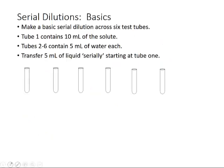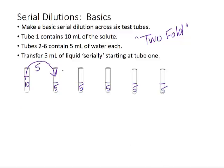What about serial dilutions? Let's start with the most common and basic serial dilution, which is called a twofold. Basically what twofold means is we're cutting the concentration in half with each step. I'm going to make a basic serial dilution across six test tubes. Tube one has 10 milliliters. Tubes two through six have five milliliters of water each. I know it seems silly to some of you to draw this out, but if you're a beginner, drawing it out really helps. I'm going to transfer five milliliters of liquid serially, starting at tube one, so that's going to be my aliquot.